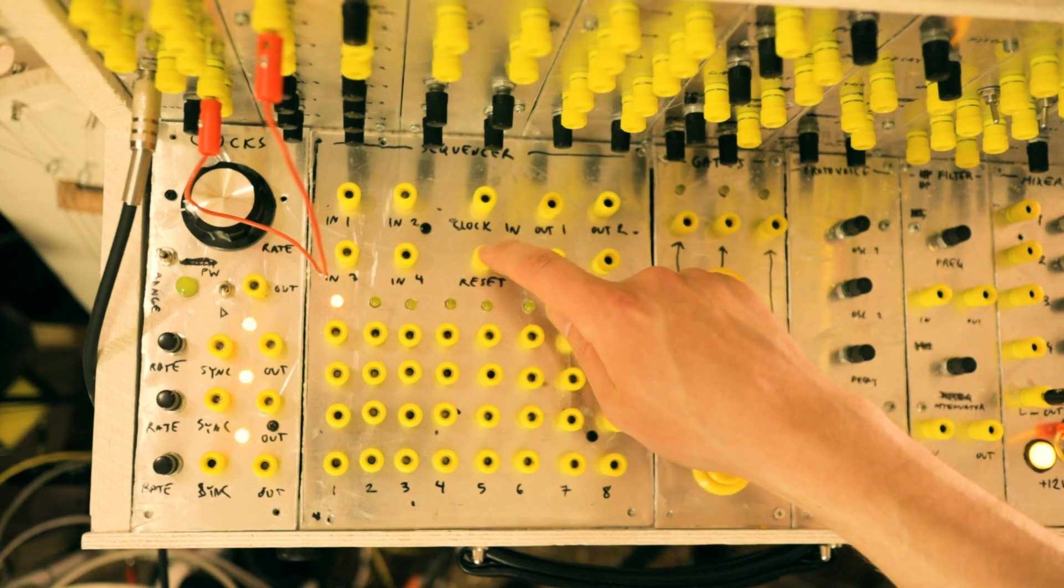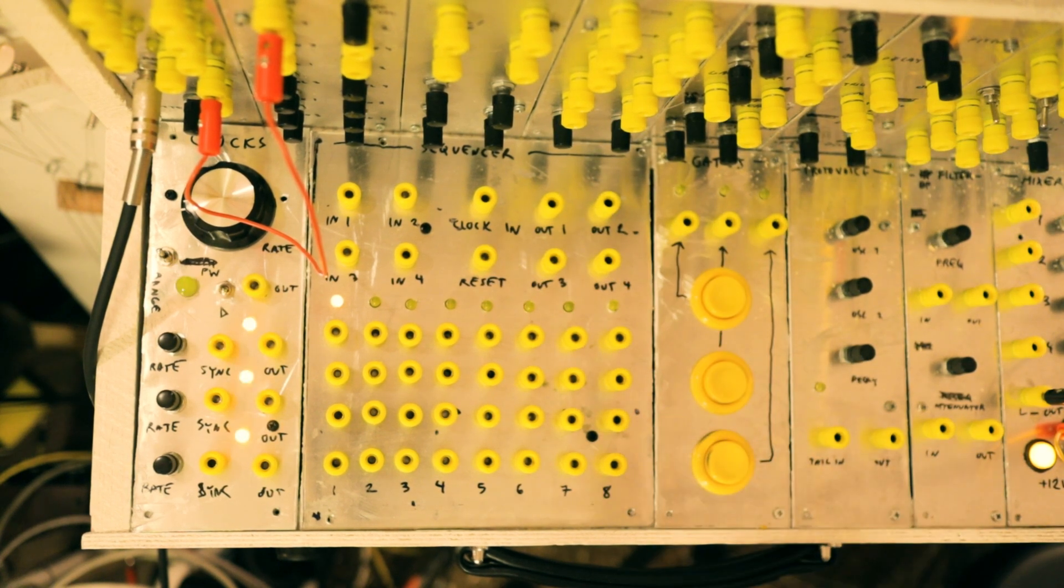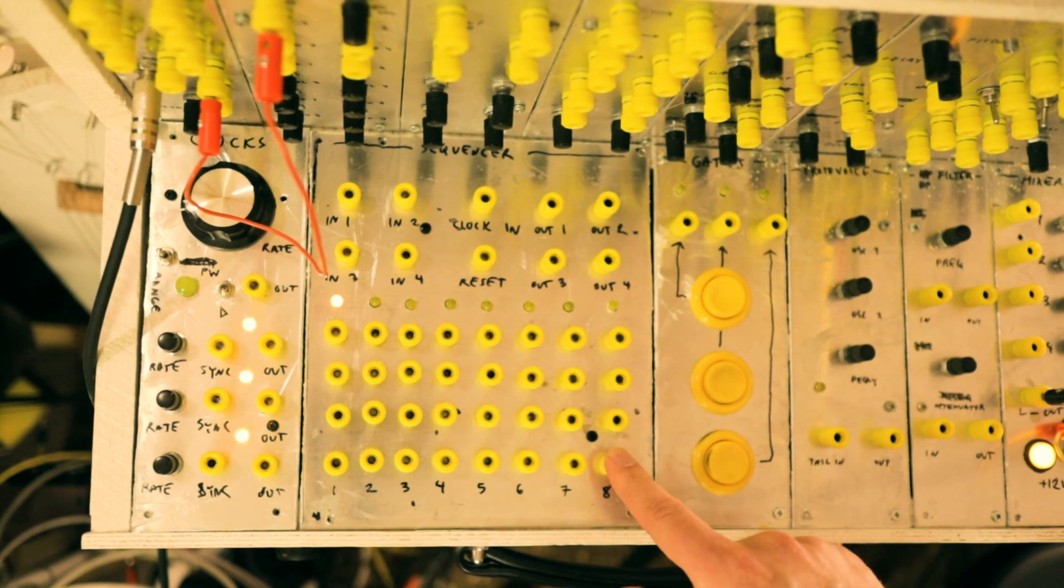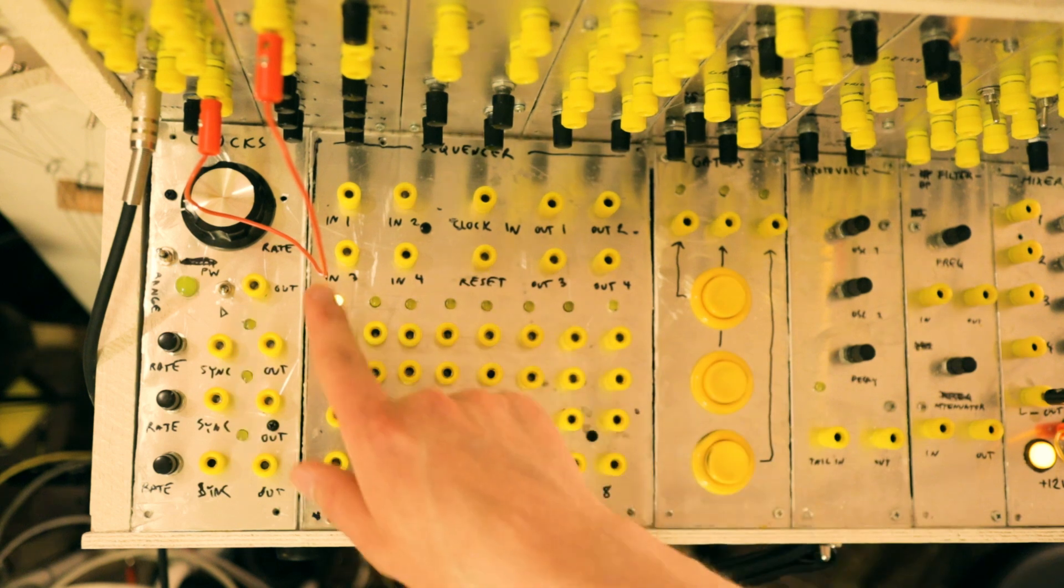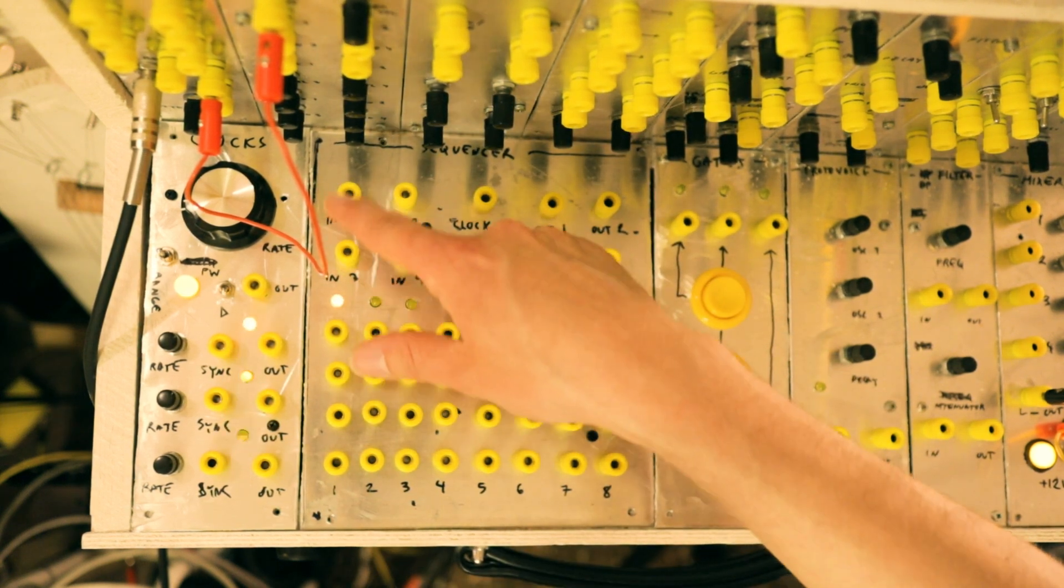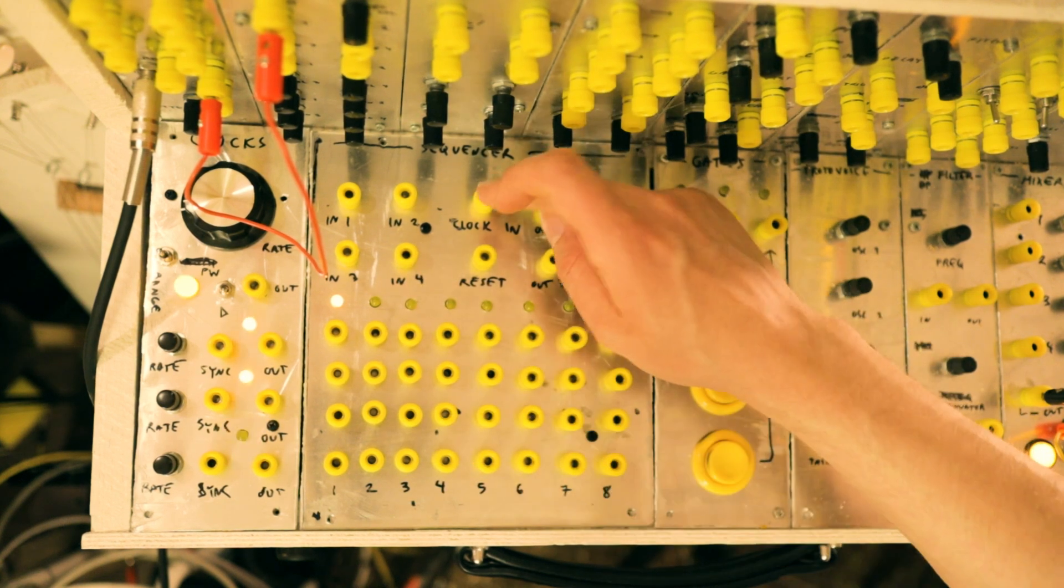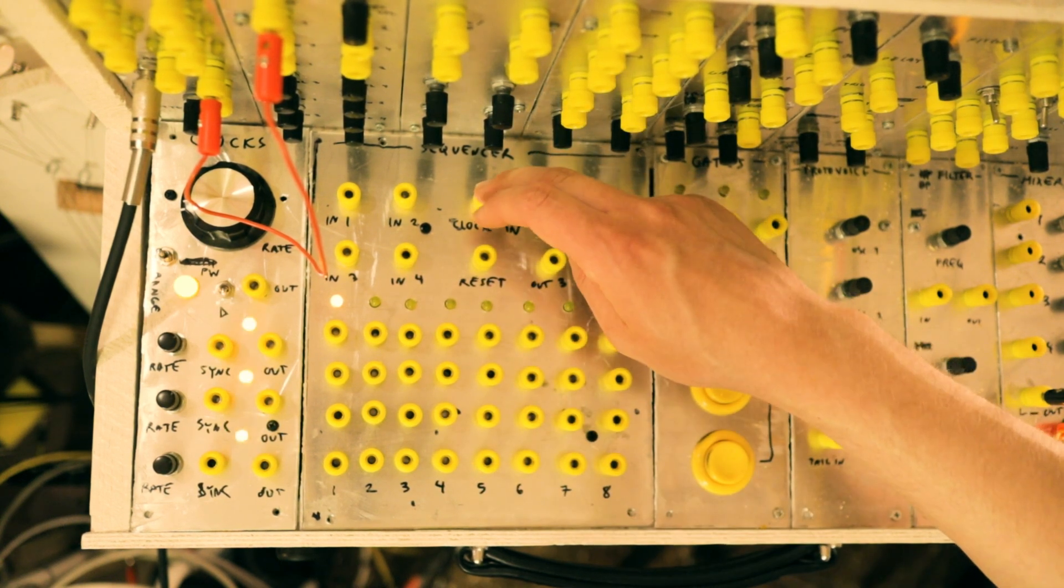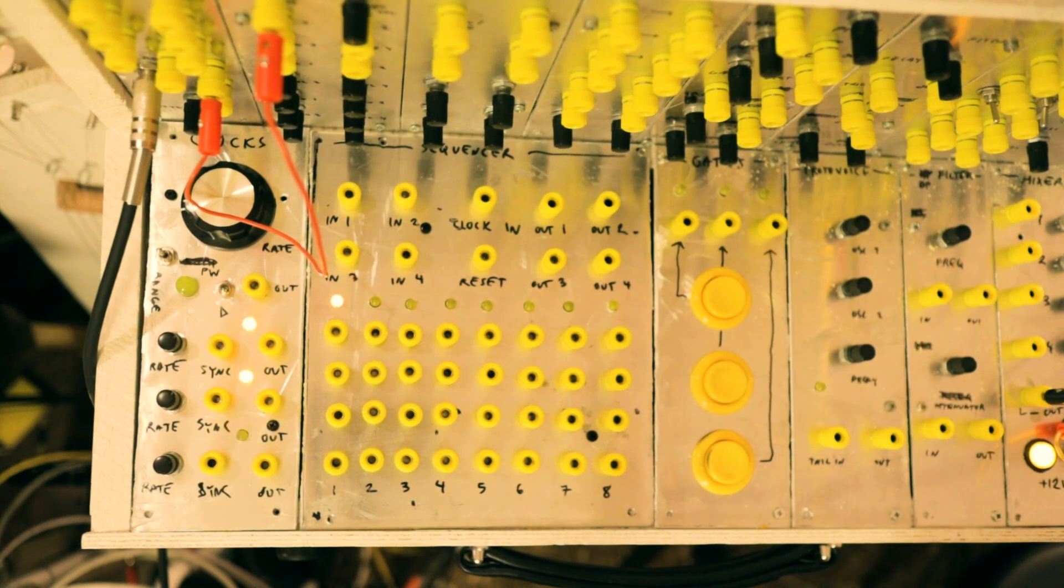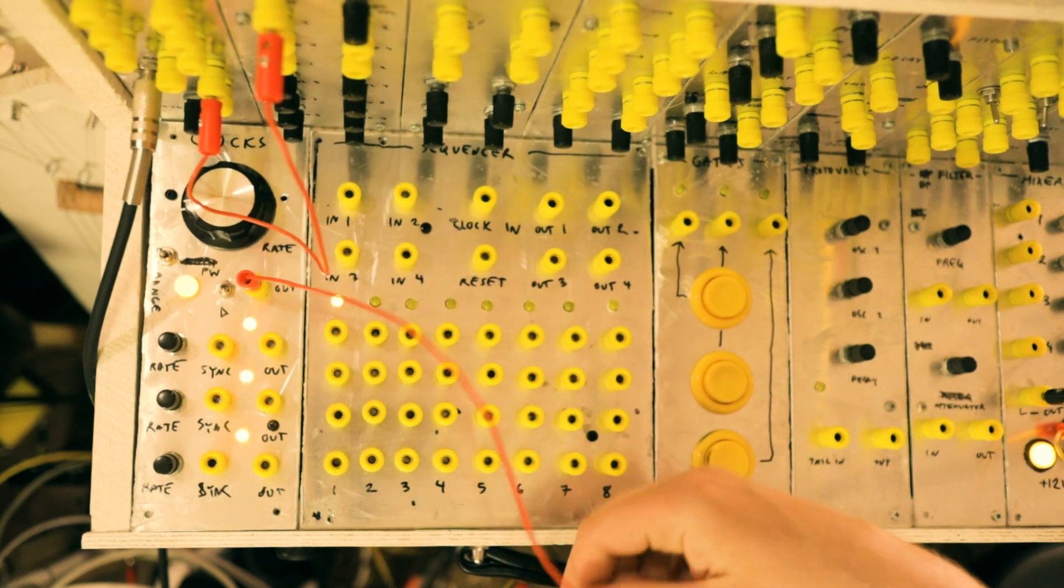So this thing here is not connected to anything behind the panel. Here are the four rows of eight step sequences you can patch and then you patch them here to these inputs, these are the inputs of the AND gates. And here's the clock input and it's normaled to the other input of all the AND gates and here are the outputs of the AND gates.